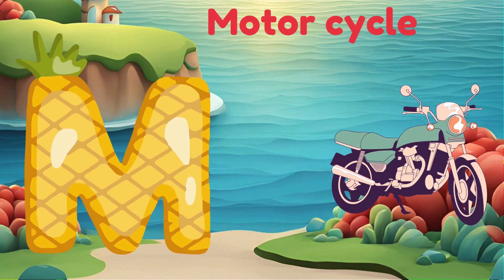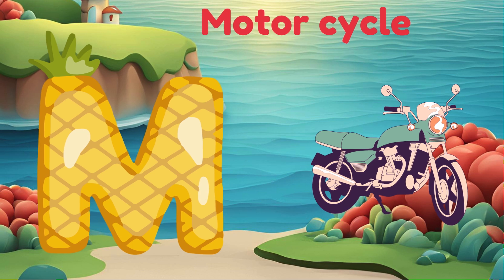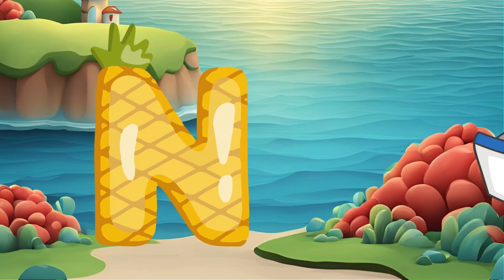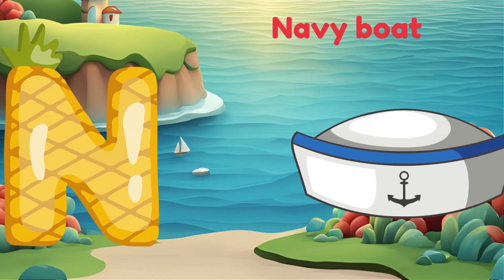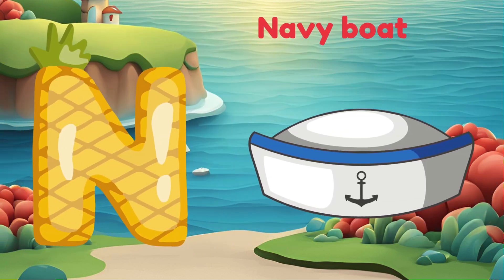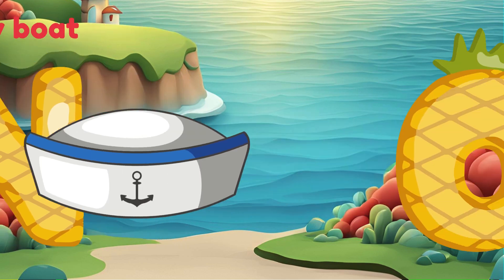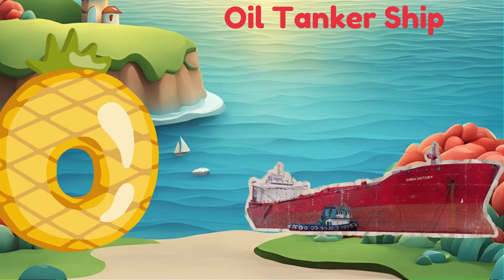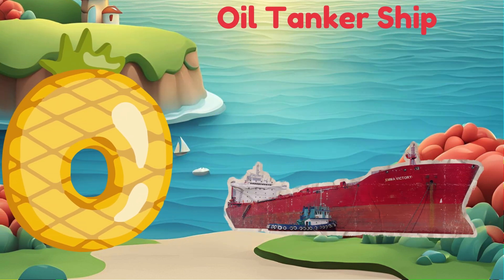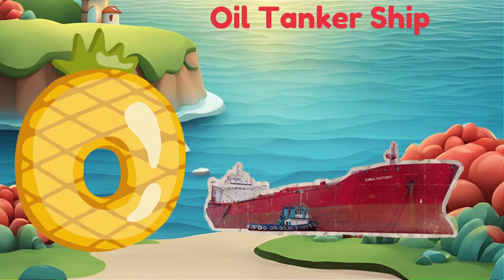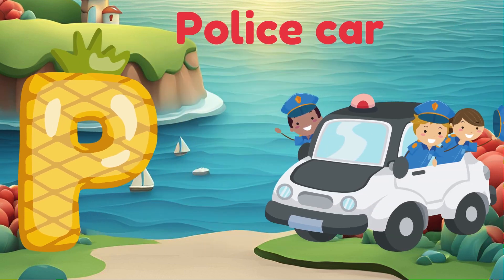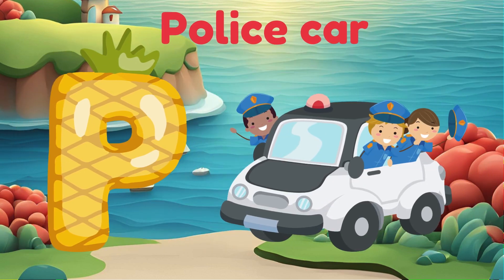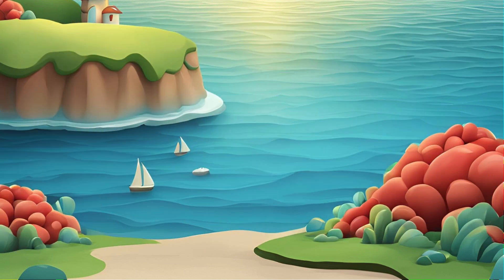M is for Motorcycle. M. Motorcycle. N is for Navy Boat. N. Navy Boat. O is for Oil Tanker Ship. O. Oil Tanker Ship. P is for Police Car. P. Police Car.